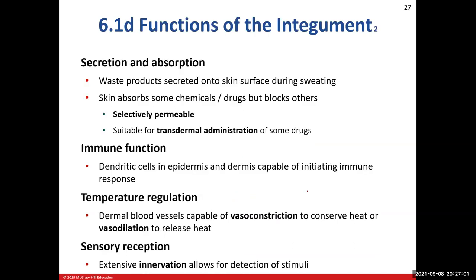Secretion and absorption is another function of the integument. Secretion comes from sweating. The absorption function comes from — for example — nicotine patches, which are transdermal patches. When you stick a nicotine patch on your skin, the skin allows certain chemicals to be absorbed. So we can say our skin is selectively permeable — it allows certain drugs or chemicals to permeate into our blood vessels and blocks others.